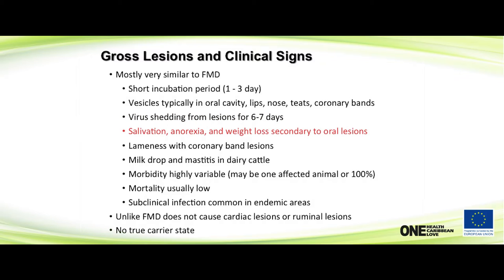It causes salivation, anorexia, and weight loss, as you'd expect from an animal with lesions in its mouth. It also causes lameness from lesions in the feet and coronary bands. Similar to foot and mouth disease, one of the first things you see is milk drop, and you sometimes see mastitis. Morbidity levels are variable. Mortality levels are extremely low, and there are many cases of subclinical infection with no clinical signs.